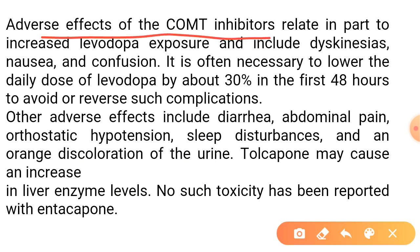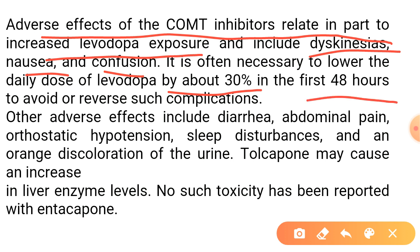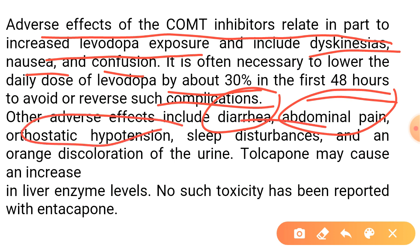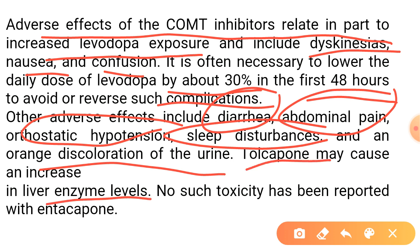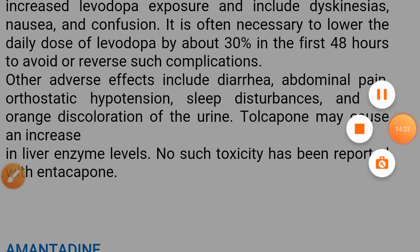Adverse effects of COMT inhibitors are related in part to increased levodopa exposure and include dyskinesia, nausea, and confusion. It is often necessary to lower the daily dose of levodopa by about 30% in the first 48 hours to avoid or reverse these complications. Other adverse effects may include diarrhea, abdominal pain, orthostatic hypotension, sleep disturbances, and discoloration of urine. Tolcapone has been associated with elevated liver enzymes and hepatotoxicity, but this is not reported with entacapone.